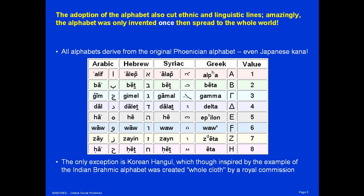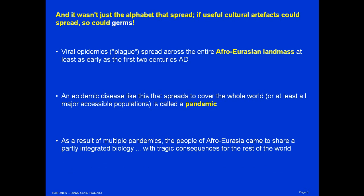Those Japanese kana symbols are ultimately based on the Phoenician alphabet. In fact, the only alphabet in the world that cannot be traced to the ancient Phoenician alphabet is Korean Hangul, which was created in modern times as an explicit attempt to create a new alphabet. All other alphabets that arose organically spread from Phoenicia, from an alphabet invented 3,000 years ago. Of course, it wasn't just the alphabet that spread — if useful cultural ideas like the alphabet could spread to cover all of Afro-Eurasia, so could germs.